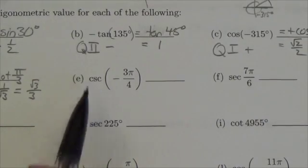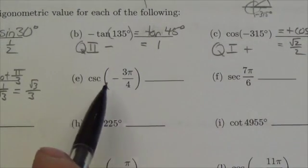So this question right here is asking us to find, in exact form, the cosecant of negative 3 pi over 4.